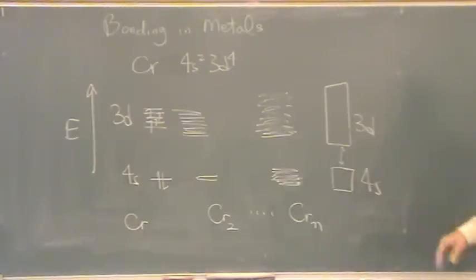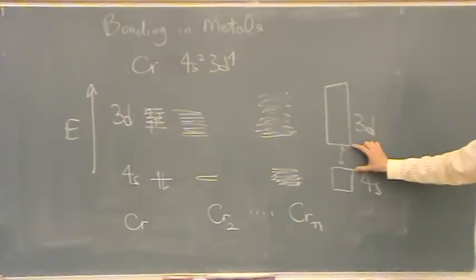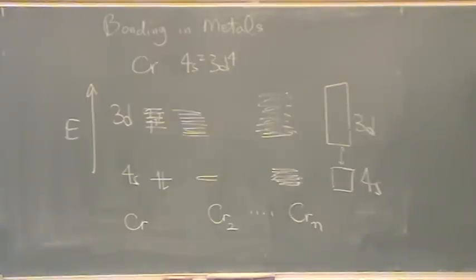This helps us explain things called semiconductors, because not as much as metals, but in semi-metals, this band gap is big enough where sometimes it will jump that gap and sometimes it won't. So if you have something like silicon,